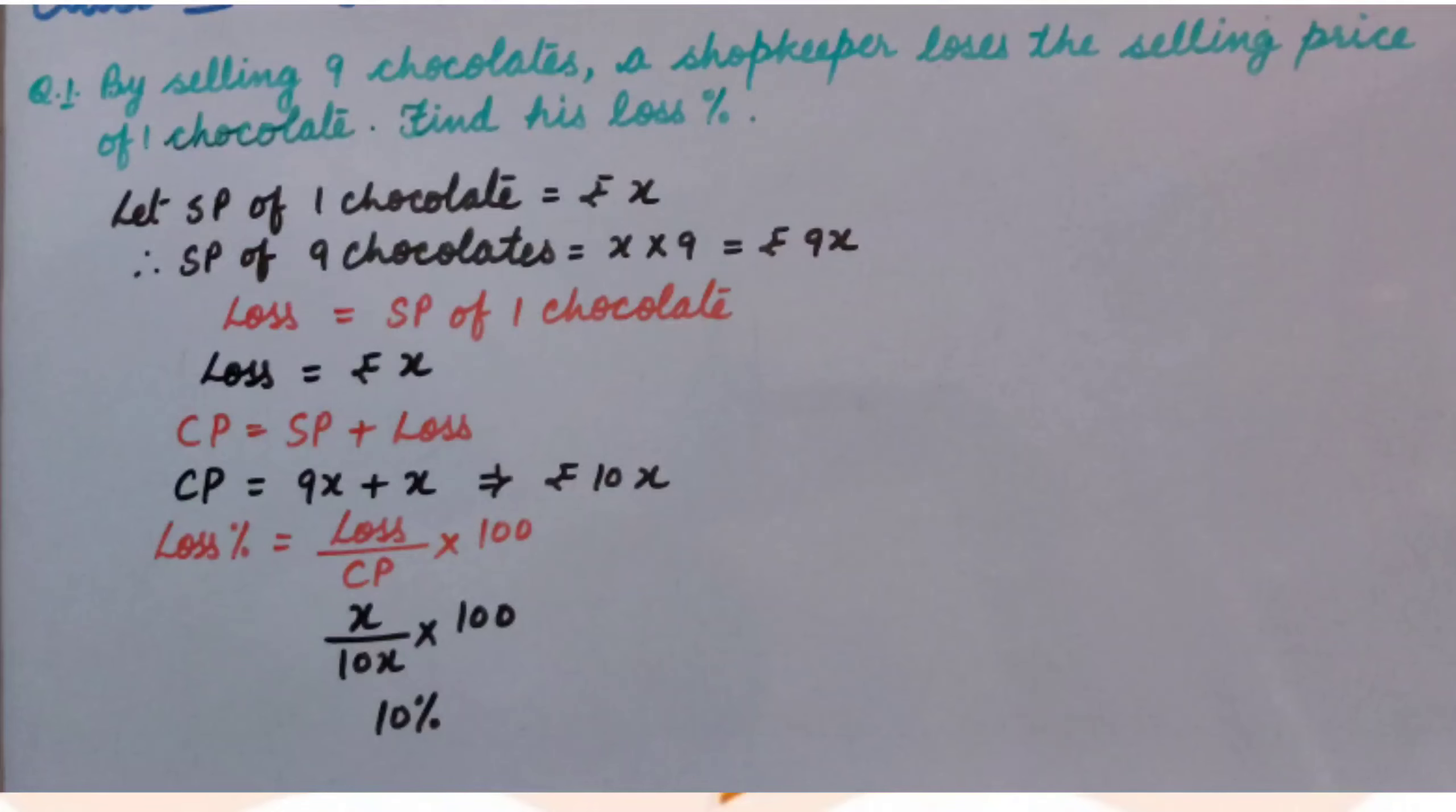Means, loss is equal to SP of 1 chocolate. So we will let SP of 1 chocolate, that is Rs. X. So SP of 9 chocolates will be X multiplied by 9, that is Rs. 9X.